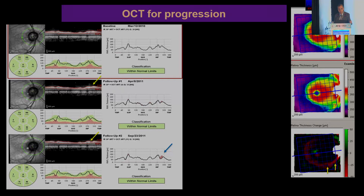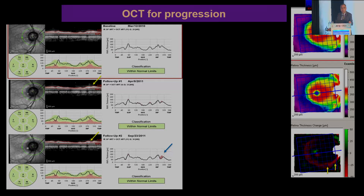How do we use OCT for progression? We use this clinical profile. We look at the pink area, which is the change from the baseline. We look at this loss of tissue and confirm that it is indeed real loss of tissue. It's all green, so if you go with that green level, you're not going to find any change — but you can see it here. You can look at the macula simultaneously. You can see the baseline measurement and a subsequent measurement only five months later, with a huge loss of macular thickness happening both superiorly and inferiorly.